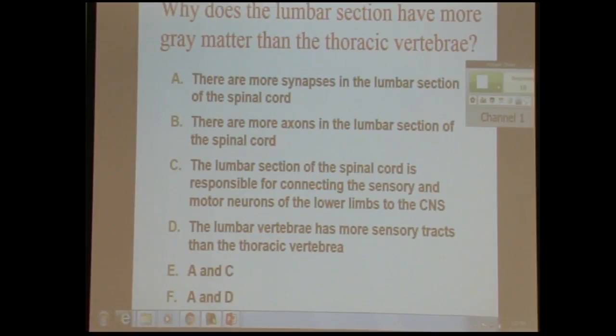Does that kind of make sense? Clearly it sort of did because three-quarters of you got to E. And there's a slight mistake on the study guide there. These are the two we're trying to compare. On the study guide, it says explain why the cervical has more than the thoracic. It should say, why does the lumbar have more than the thoracic?